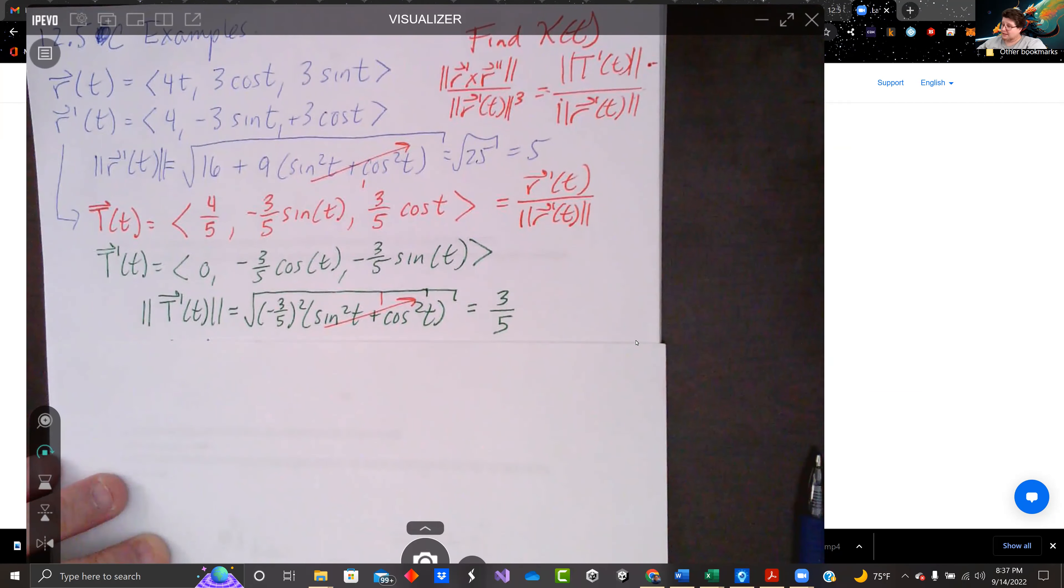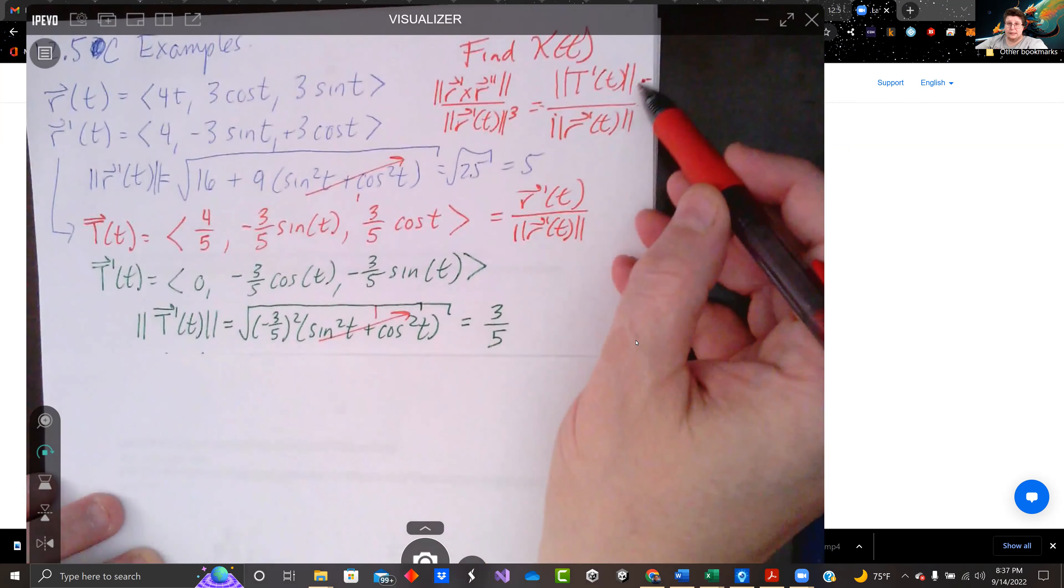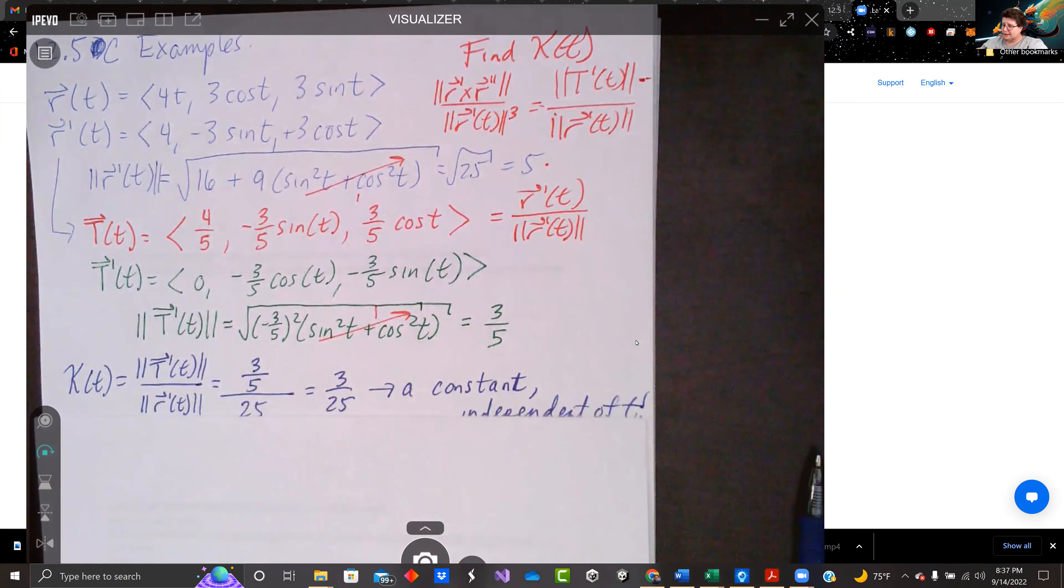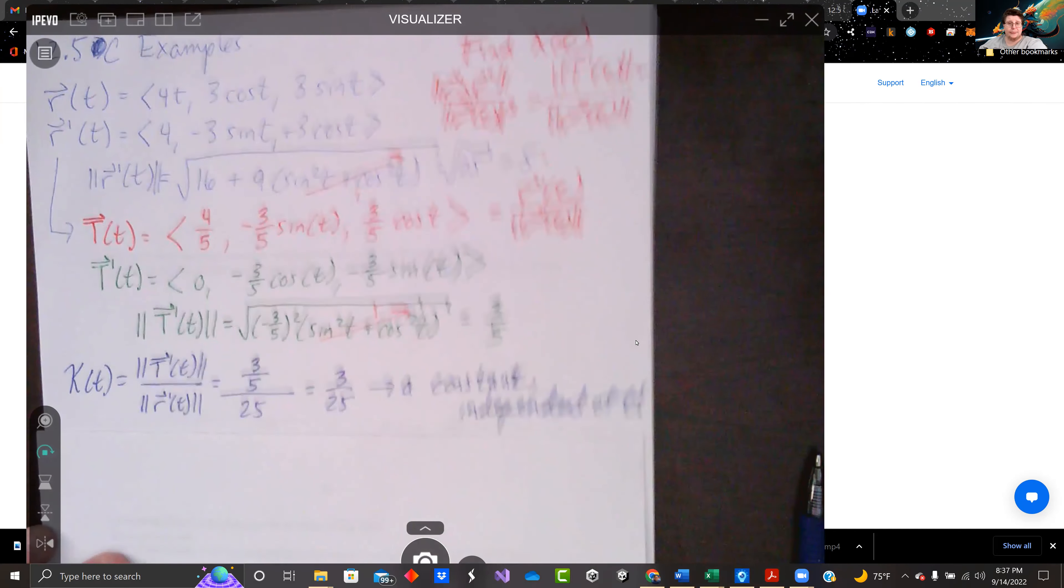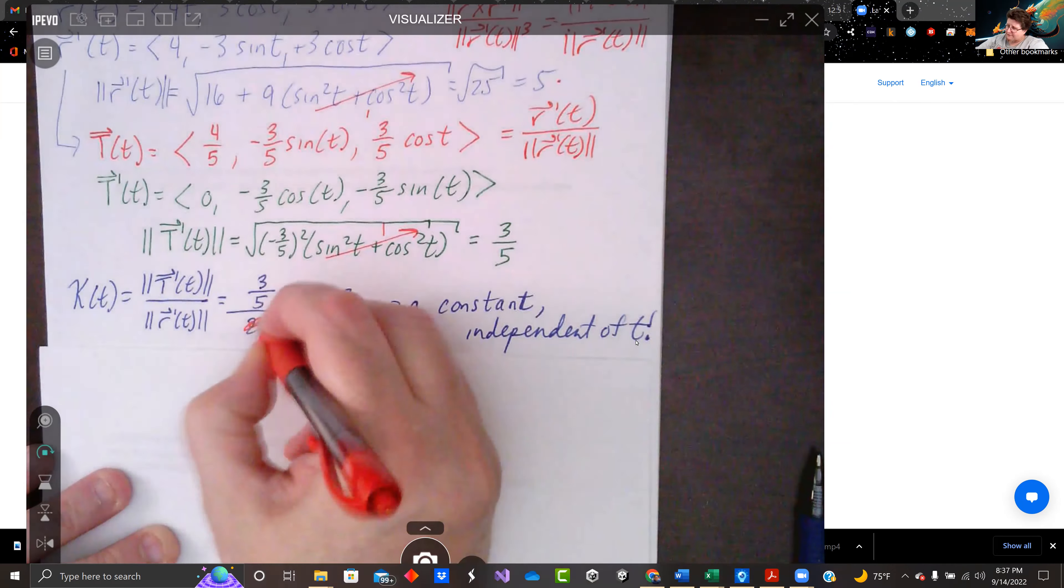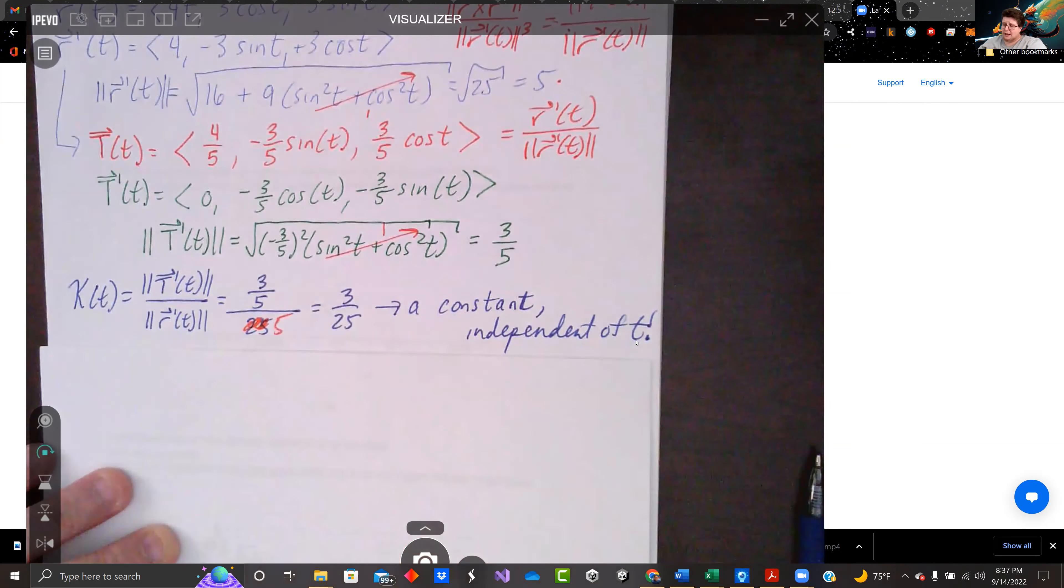That's pretty good. Because I got 3 fifths for this one, and I got the magnitude of r prime is 5. So kappa is 3 fifths divided by, what the hell? I wrote 25. That should just say 5. And 3 fifths divided by 5 is 3 over 25. That is a constant number. It is independent of time.